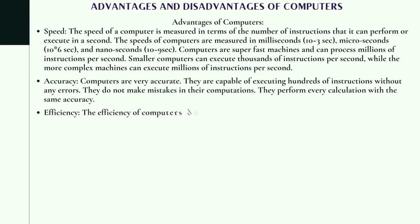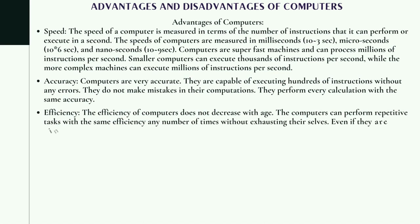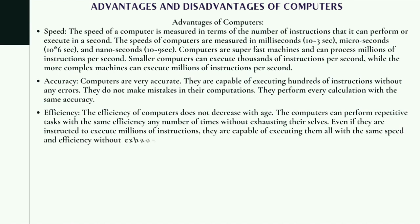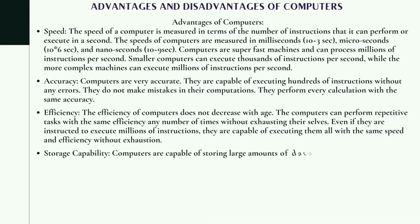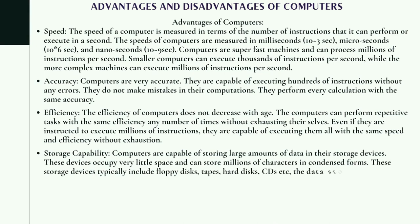Accuracy: Computers are very accurate. They are capable of executing hundreds of instructions without any errors. They do not make mistakes in their computations and perform every calculation with the same accuracy. Efficiency: The efficiency of computers does not decrease with age. The computers can perform repetitive tasks with the same efficiency any number of times without exhausting themselves, even if they are instructed to execute millions of instructions.